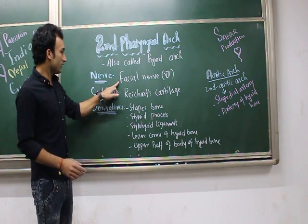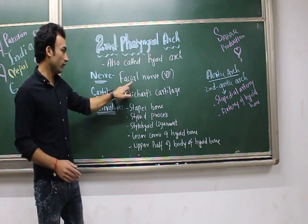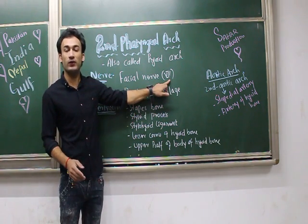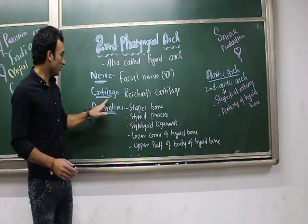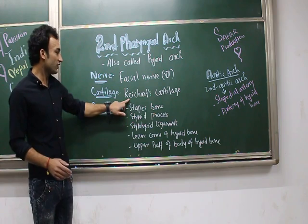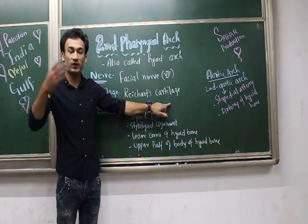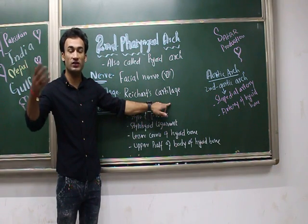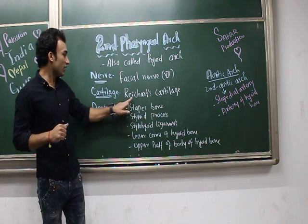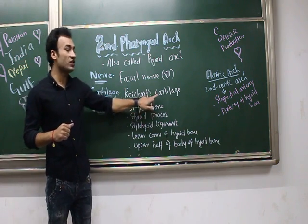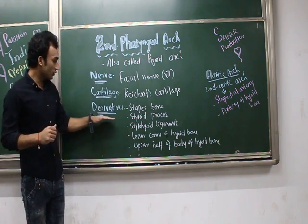The nerve for the second pharyngeal arch is the facial nerve, which is cranial nerve number seven. The cartilage of the second pharyngeal arch is called Reichert's cartilage. For the first pharyngeal arch, that was Meckel's cartilage.